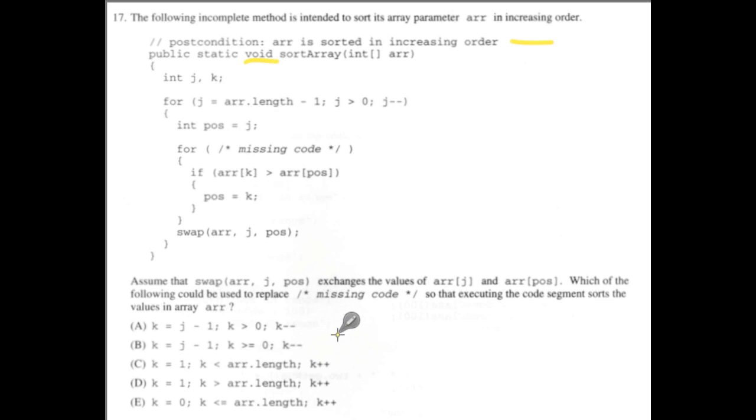So since we know we're going down from the array length or J, right, towards the beginning, these three that reference array length are not going to help us out. So we can eliminate those immediately, because in this loop we're going down towards the beginning of the array, zero.